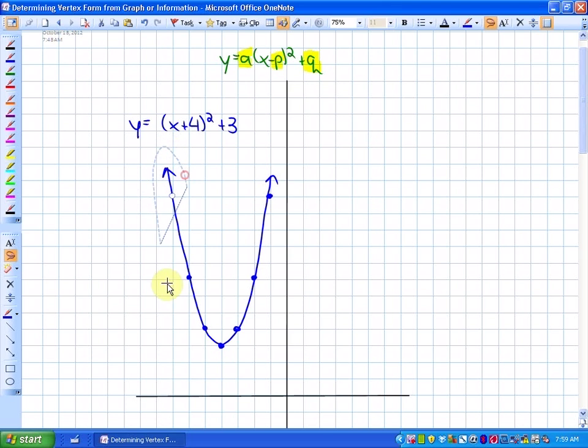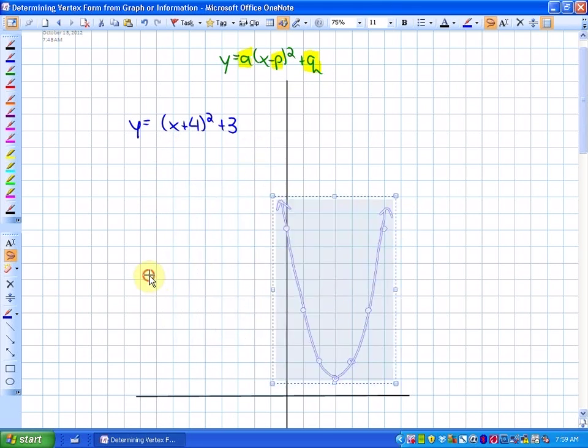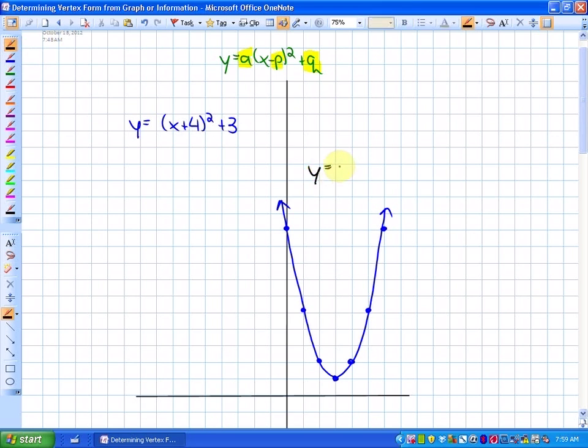If I move that function again, maybe over here, that function now would look like y is equal to x minus 3 squared, because I moved the vertex 3 units to the right, plus 1.